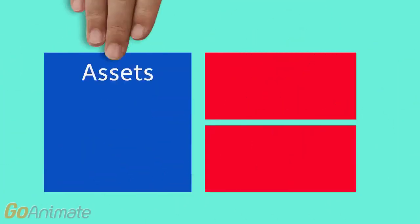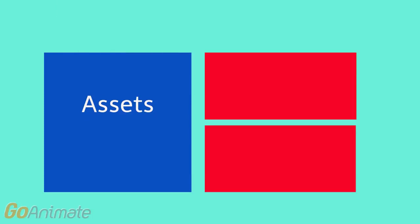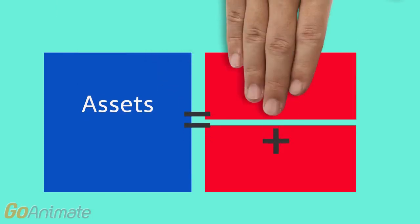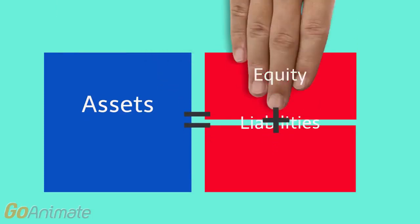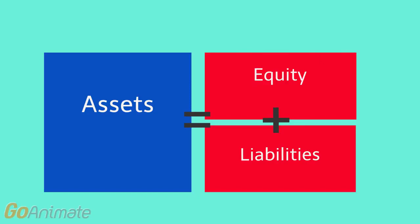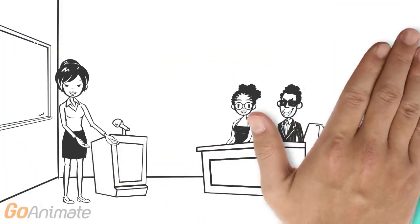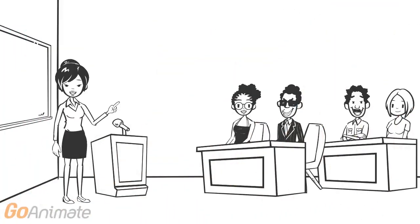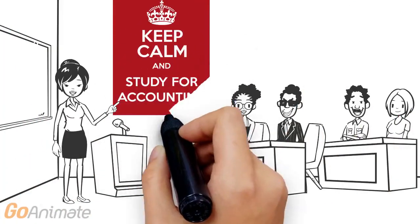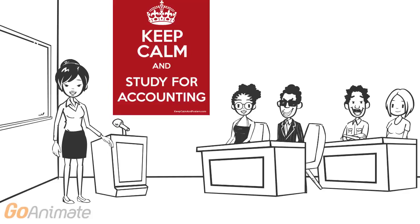So this is what we call double-entry bookkeeping. Every transaction in the business has at least two effects that have to be recorded. This is the end of the video. I hope you found it useful. Until next time, keep calm and study accounting.